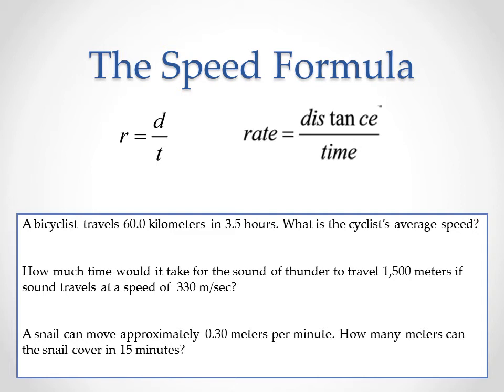The speed formula can help you find your constant rate — how fast you were traveling, or your average speed during a trip. To find this rate, we use the ratio of distance over time. For example, a bicyclist travels 60 kilometers in three and a half hours. What's the cyclist's average speed? 60 kilometers is the distance, three and a half hours is the time, and when we divide those two we can figure out their constant rate — how fast they were going every hour.